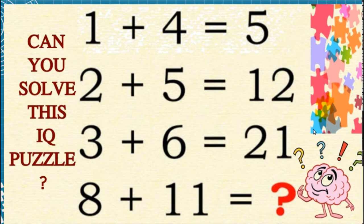Then, what will be the answer for the fourth equation? 8 plus 11 is equal to 19. Wait - it cannot be 19. If we assume 2 plus 5 is equal to 12 and 3 plus 6 is equal to 21, then 8 plus 11 is not 19. It's something else.